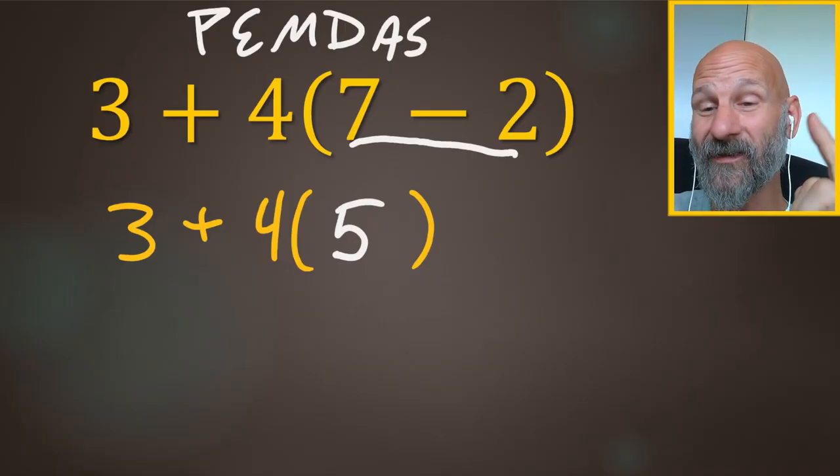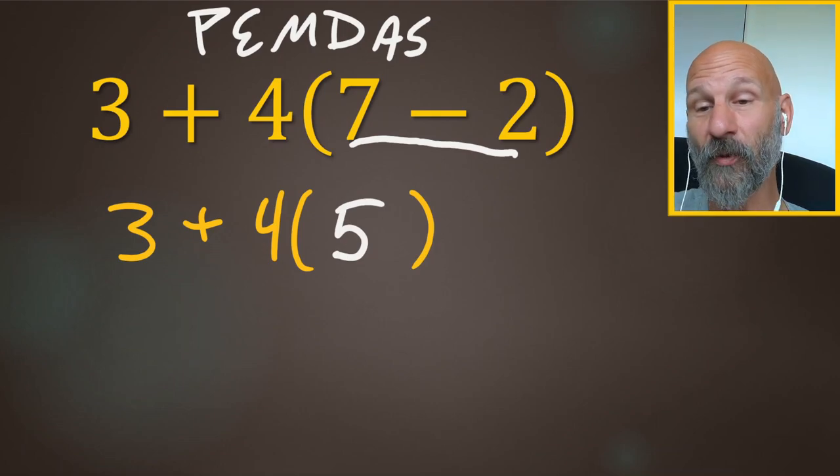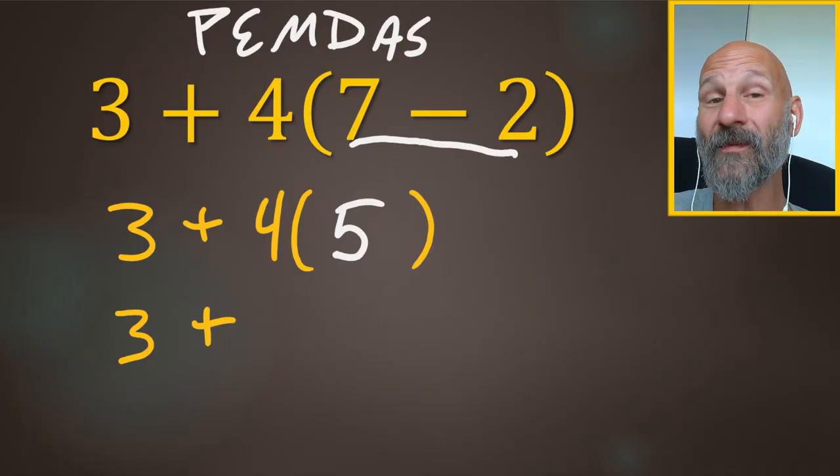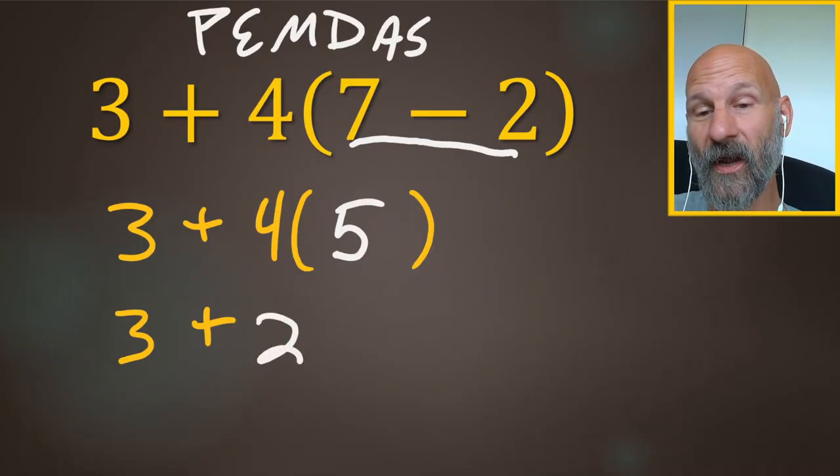The multiplication is next. The 3 plus is going to stay, and then the 4 times 5 is going to change to a 20.